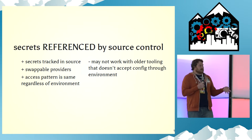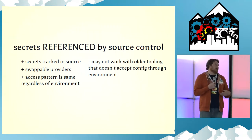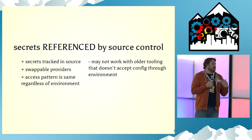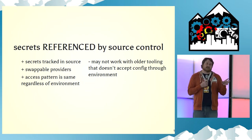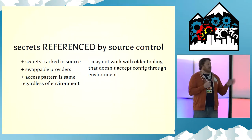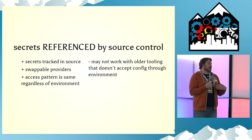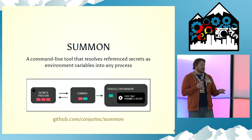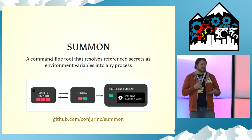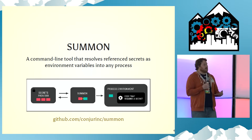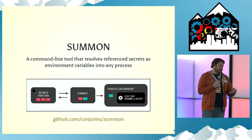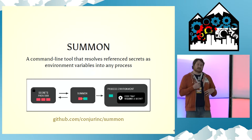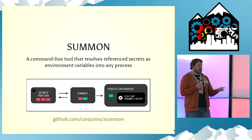I think a better pattern is secrets referenced by source control — you put the paths where secrets can be retrieved in source control, next to your application so you can track changes. And Summon really works with this. Summon is a command line tool that resolves referenced secrets as environment variables into any process.